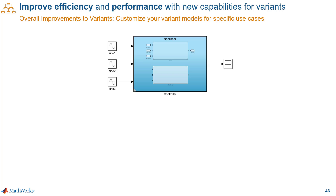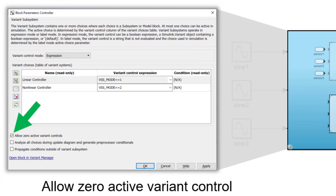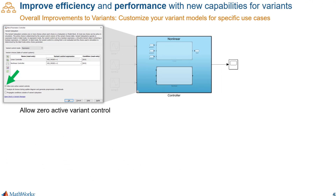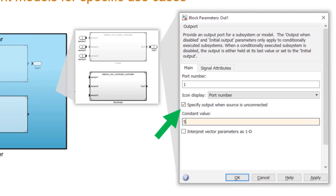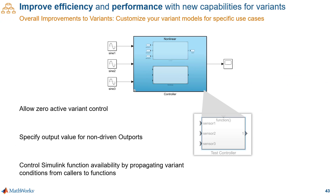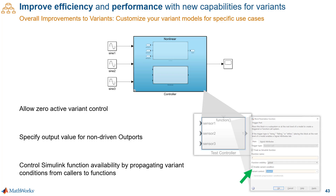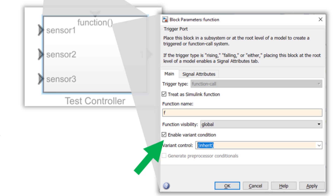Other enhancements to variants give you more flexibility: the ability to have no active variant control, which means you can still compile and simulate models with no active variant choice; the ability to specify an output value for non-driven ports; and the ability to propagate variant conditions from function callers to Simulink functions themselves, giving you variability for Simulink functions.